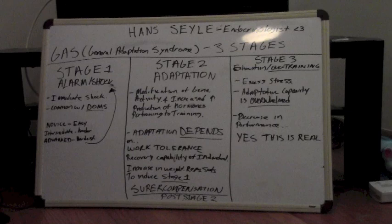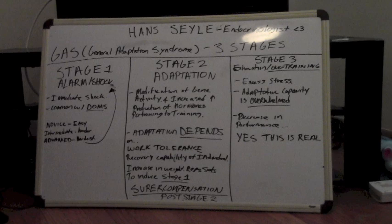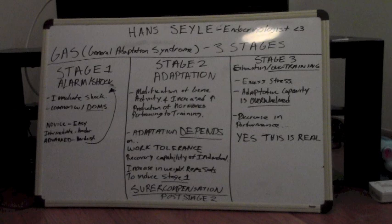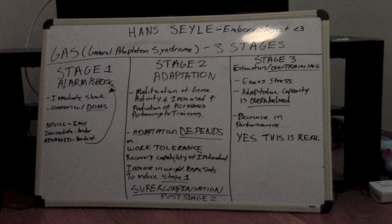Stage three is referred to as exhaustion and overtraining. Essentially what this boils down to is excessive stress — excessive metabolic stress, excessive muscular stress — and performance decrease. The adaptive capacity is overwhelmed, therefore adaptation can't necessarily occur. I know many people are going to say overtraining doesn't exist, it's not real — but it's real. It's just that many of us don't tend to push our training that far unless we're complete morons. You need recovery in your program.